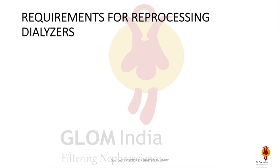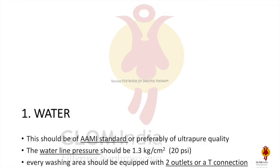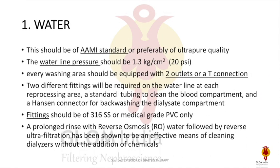The first requirement for reprocessing is water. The water should be as per AAMI standards and preferably ultra-pure quality. The water line pressure should be at least 20 psi. The washing area should have either two outlets or a T-connection: one for the blood compartment, where standard tubing is adequate, and one for the dialysate compartment, where a Hansens connection is required.